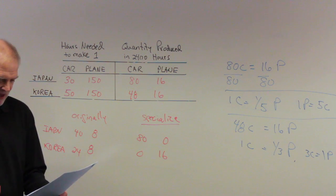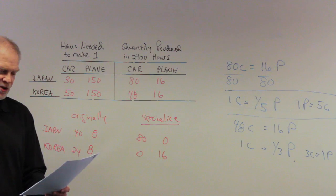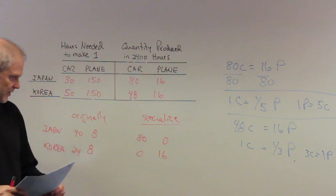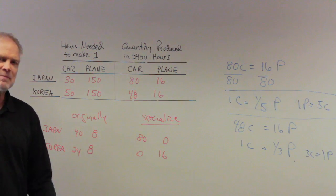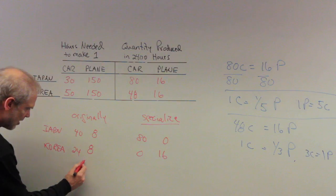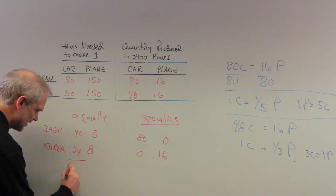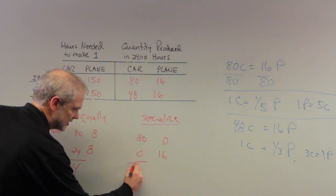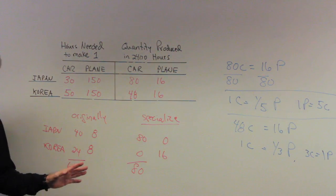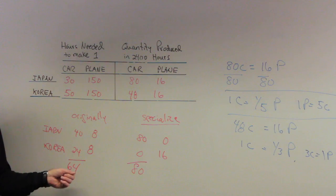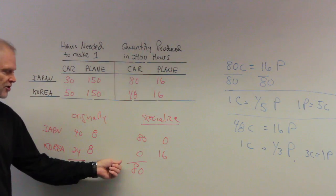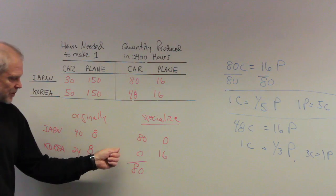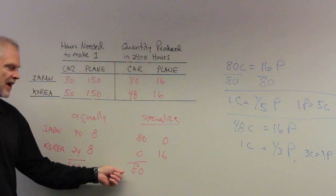So what's this question asking us? It says, now each country spends all its time producing the good for which it has a comparative advantage. I've just done this right here. As a result, total output of cars increased by... Oh, wait a minute. Output of cars before specialization was 64. Output of cars after specialization is 80. So now, if you think about it, when countries didn't specialize, tried to produce both things themselves, the total amount of cars available to the world was 64. Now, with specialization in Japan, a very efficient producer of cars is producing only cars. The world now has the opportunity of output of 80.